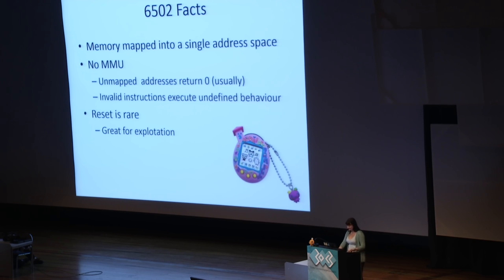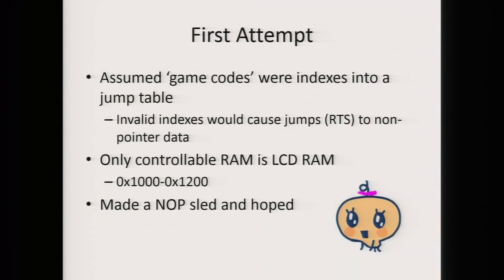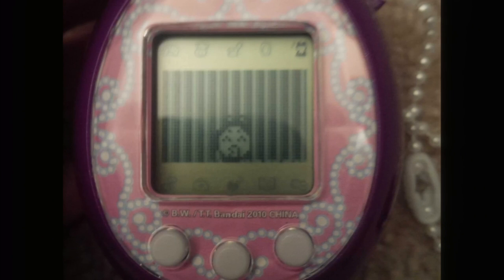Knowing this, I thought it was worth trying to exploit this. I imagined how it might work internally — maybe game codes index into a jump table. There's only a small amount of RAM I can control from a figure — the stuff displayed on the screen — but that's about 200 bytes of RAM. I thought I'd just make a NOP sled and hope. This is Marachi in front of my NOP sled. I eventually figured out how to make her move so as not to mess with my exploit. I tried all 256 codes and hoped I would jump to the shellcode, and I did not.